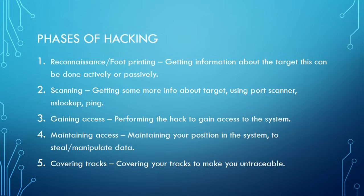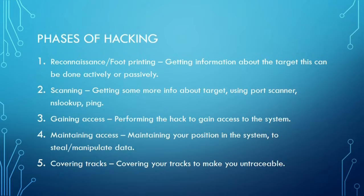Now the next thing I want to talk about are the phases of hacking. These are very important points — basically the steps you need to follow for a successful hack. Step one is reconnaissance or footprinting. This is getting information about the target and can be done actively or passively. Actively meaning you go into the offices and see what computers and operating systems they're running, what servers they have. Passively can be done through social engineering. Step two is scanning — getting more information about the target using tools like port scanners, NS lookup, and ping, getting details about how the servers or the connection is.